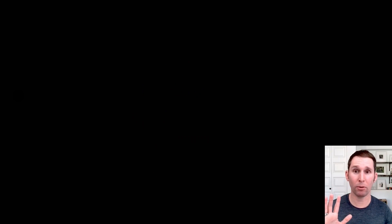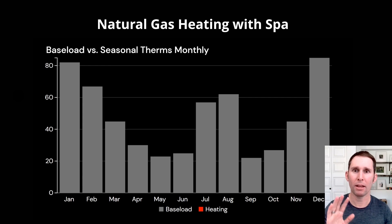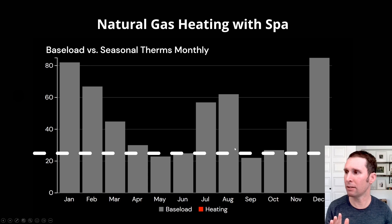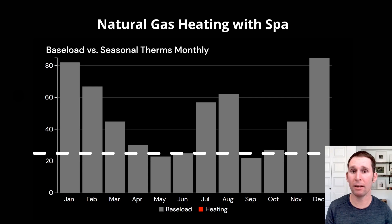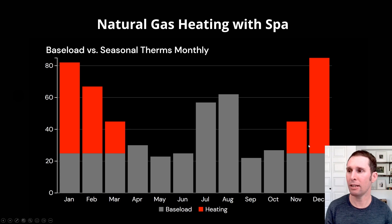One more example: what if you see an anomaly where it just doesn't make sense? Think about specific large loads that might use a large amount of energy during specific periods. In this case, we have two summer months using a lot more gas than we'd expect — unless you have something like a spa. You're not going to include that in your seasonal usage; you account for it separately. Your seasonal heating usage is the other months that are above the baseload.